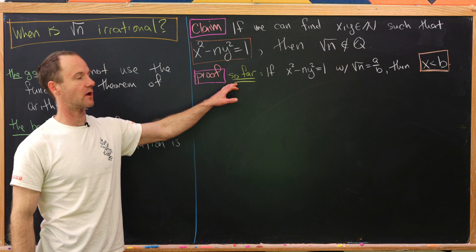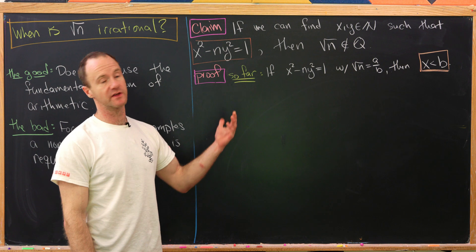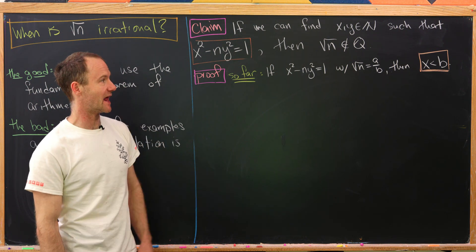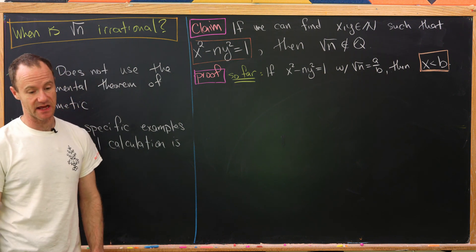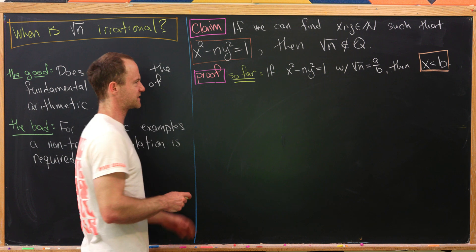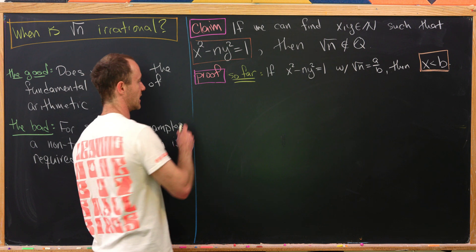So far we have the following situation. If x and y satisfy our equation, where the square root of n is rational with denominator b, then x is less than b.